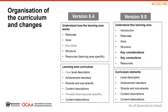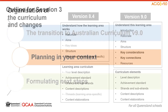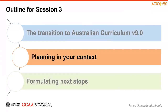In this session, we will consider the changes to the curriculum and how you can use that new knowledge base to inform your planning for Version 9. On screen now, you can see a general summary of the Version 9 curriculum compared to Version 8.4, noting the changes that have occurred. We have examined these changes for each learning area or subject in more detail in Sessions 1 and 2. We will now turn our focus to planning considerations and what you need to do in your own context to prepare for the transition, and explore some of the QCAA resources that will assist you.